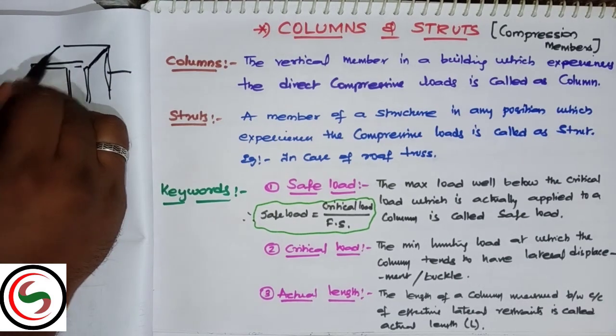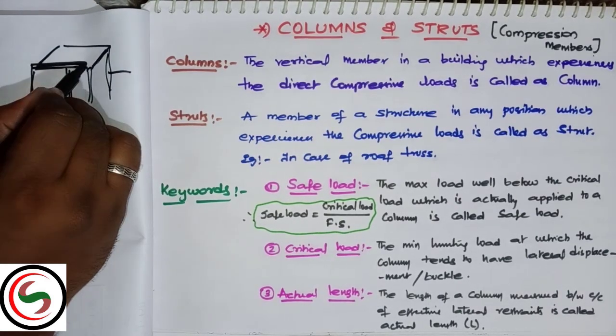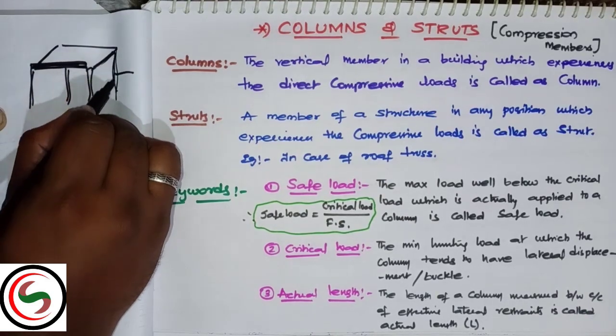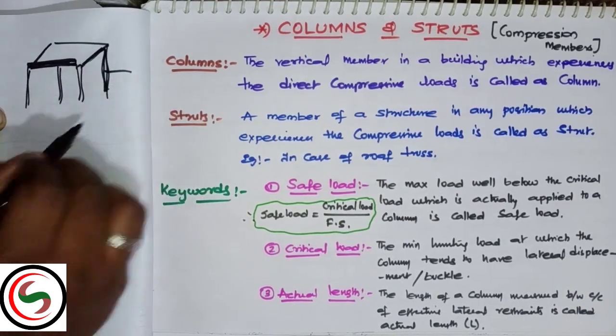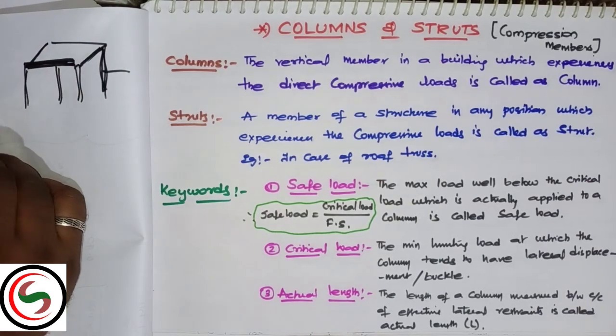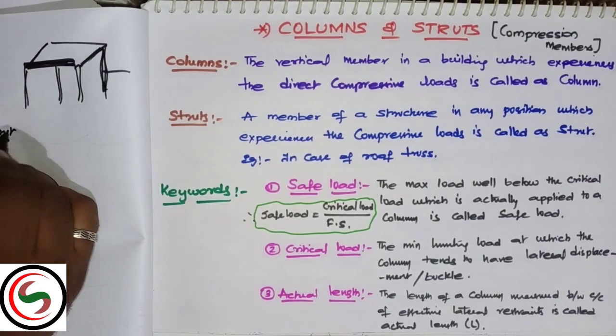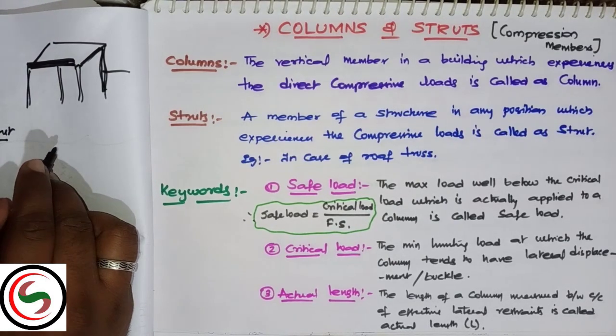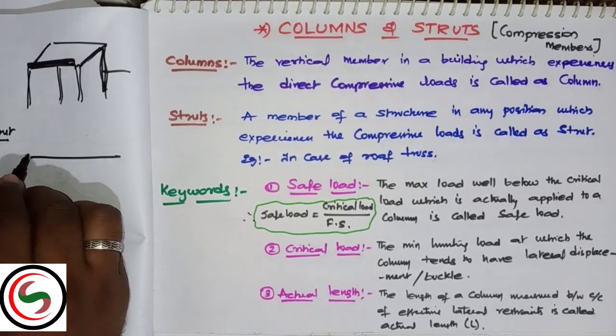So this is a column and this is a beam. These are horizontal flexural members, whereas vertical compressive members are called columns. Okay, in a framed structure we have columns and struts.